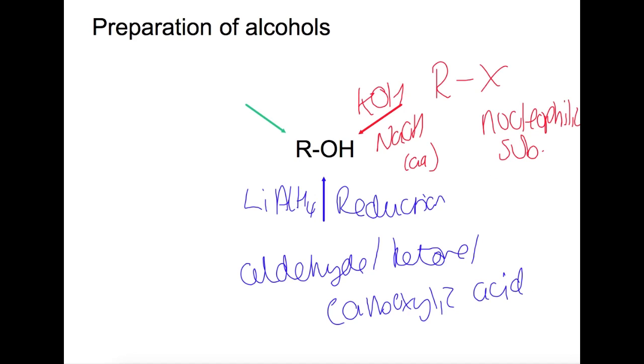The final method for preparation of alcohols is one which we'll look at the mechanism for, and that is the acid catalyzed hydration of an alkene. That involves the use of both water and H+ acid. So let's look at the mechanism for this in more detail.